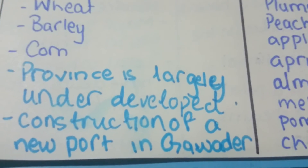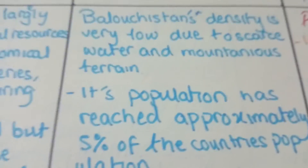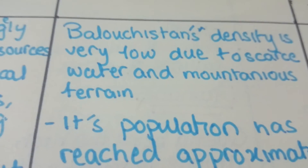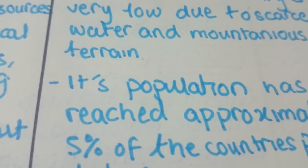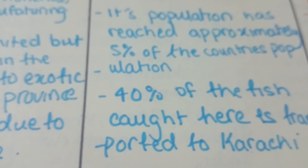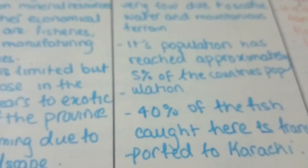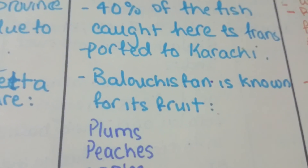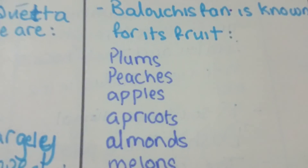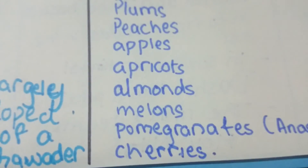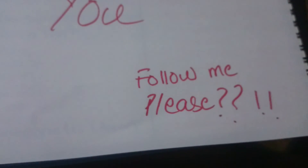The province is largely underdeveloped. Construction of a new port in Gwadar is underway, which would provide a trade route to many countries and increase Pakistan's GDP. Balochistan has a very low population density due to scarce water and mountainous terrain — its population is only 5% of the country's, despite being the biggest province. Forty percent of fish caught here is exported to Karachi. Balochistan is known for its fruits: plums, apples, apricots, almonds, melons, pomegranates, and cherries.